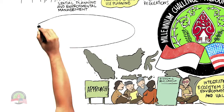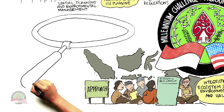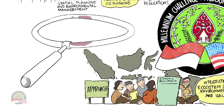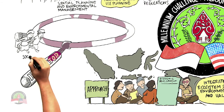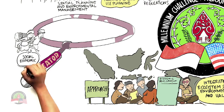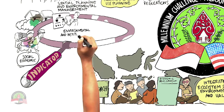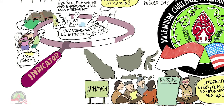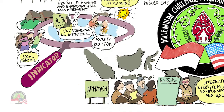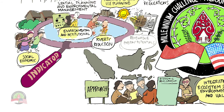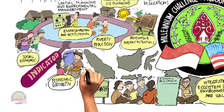Green Prosperity Projects is carried out in several locations that are selected based on a series of social, economic, environmental, and institutional indicators such as poverty level, renewable energy potentials, and economic growth.